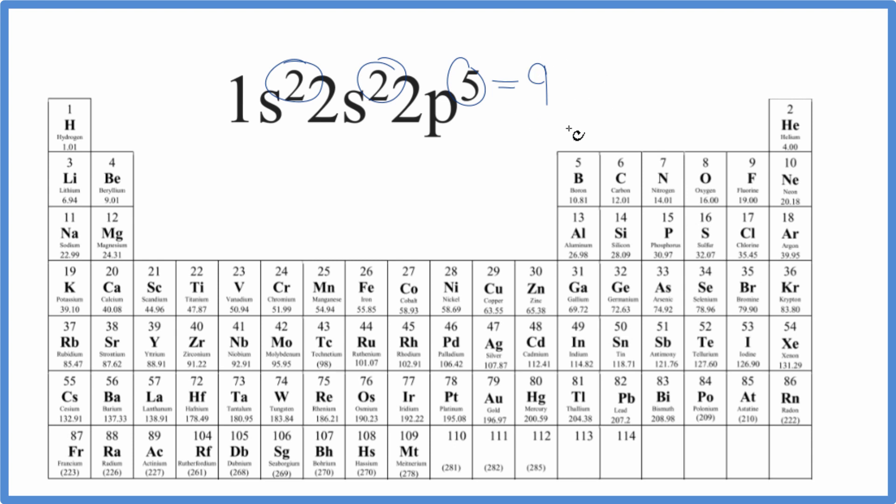So if I have 9 electrons, I just need to find the element with an atomic number of 9, and that is fluorine.